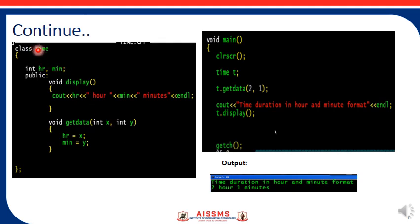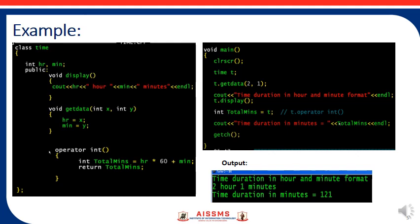Here's an example to calculate time with integer hour and minute. We have a void getdata function taking integer x and integer y. In main, we create an object of class time t. We call t.getdata and pass 2, 1, so hour becomes 2 and minute becomes 1. Calling t.display shows the time duration in hour and minute format: 2 hour and 1 minute.